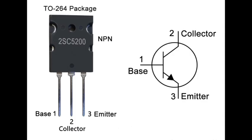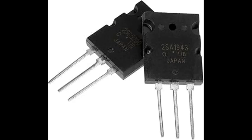In switching mode, if the base-emitter junction is forward biased, the transistor turns on, allowing maximum current to flow from collector to emitter — saturation mode. When the base-emitter junction is reverse biased or disconnected, the transistor turns off, preventing current flow — cut-off mode. This is used in high-power switching circuits, inverters, and motor drivers.